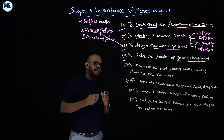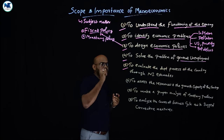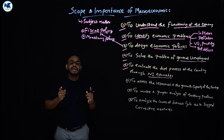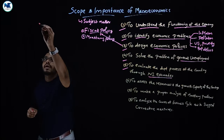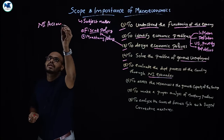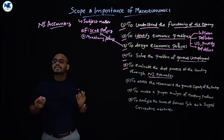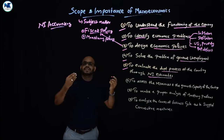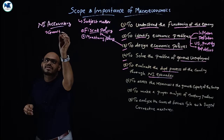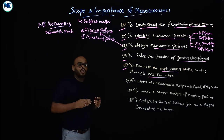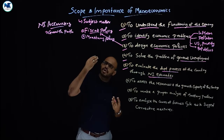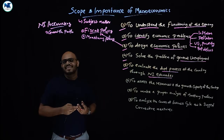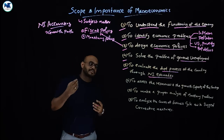The fifth point is to evaluate the development process of the country through national income estimates. National income accounting is a major topic in macroeconomics, encompassing GDP, GNP, and related measures. Using these tools, we can evaluate a country's development process and growth path — understanding whether it is a developed, developing, underdeveloped, or emerging economy — through national income measurement.